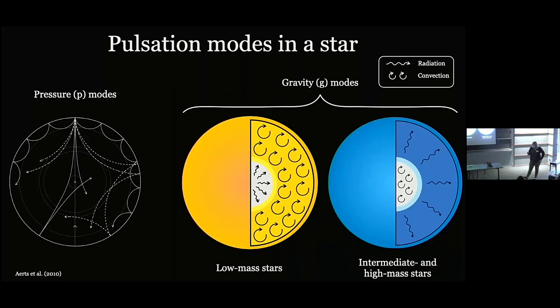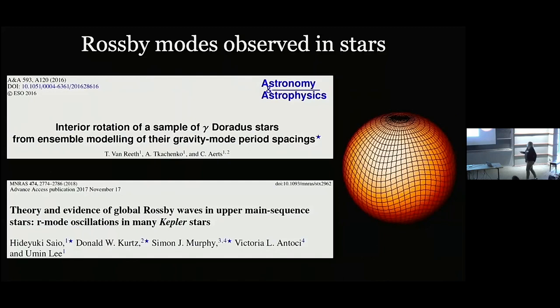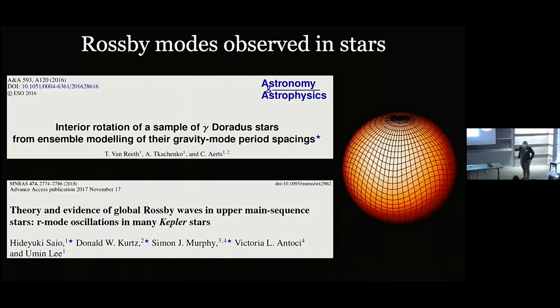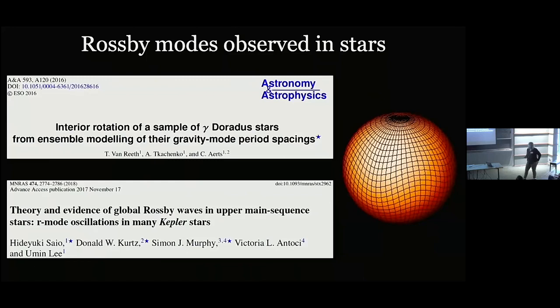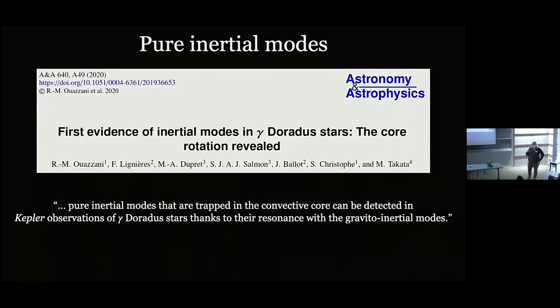We also have other types of modes such as Rossby modes — the first detection of these in a star other than the Sun was done by Timothy Manrith, who is here in the audience. There are also pure inertial modes, where the Coriolis force is the dominant restoring force. As Rita Maria Rüssani has shown, these inertial modes can propagate in the convective core, and through resonance mode coupling between inertial and gravity-inertial modes, we can also learn about convective cores for these pulsators.